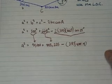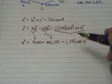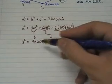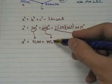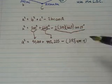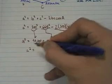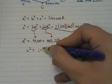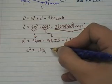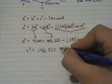And you can keep more if you'd like. Now I'm going to basically just add these three numbers together. So 90,000 plus 442,225 minus 385,404. And I get A squared equals 146,820.6.